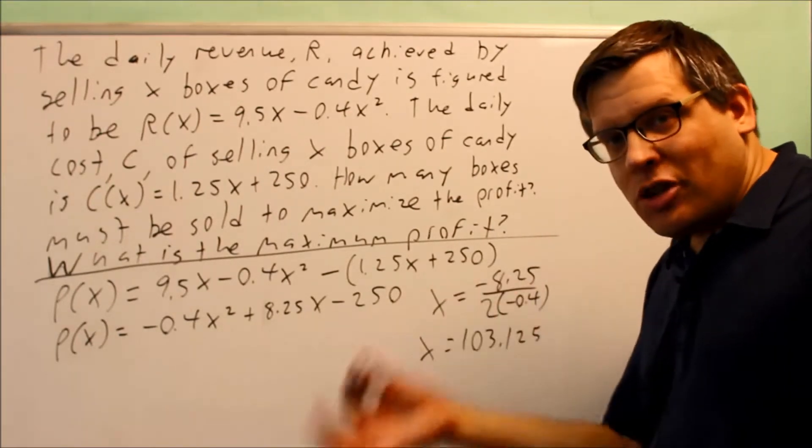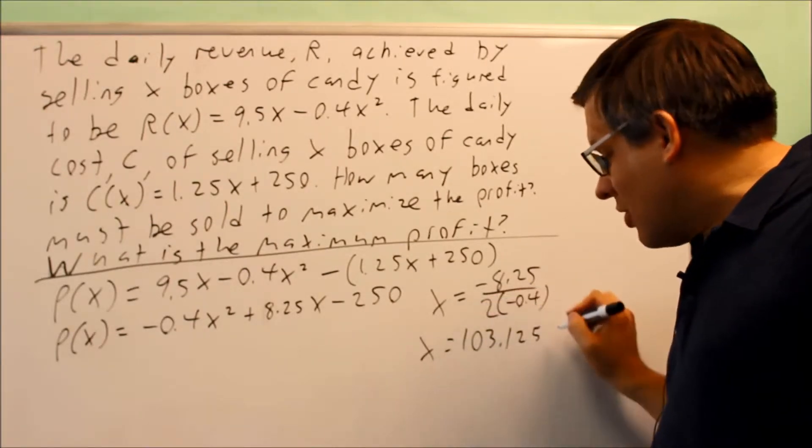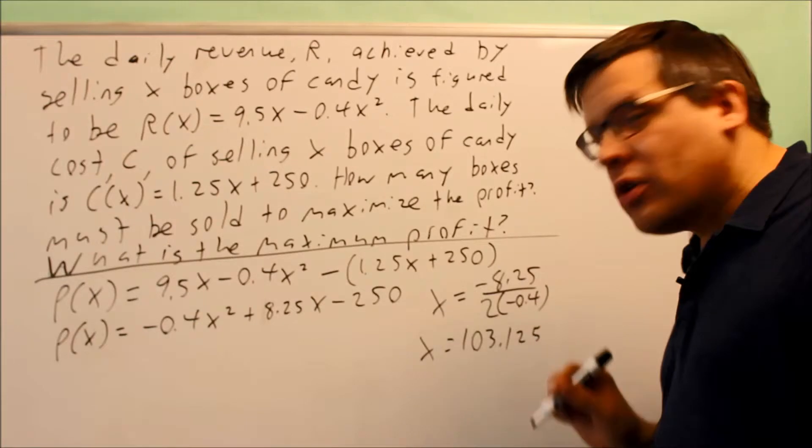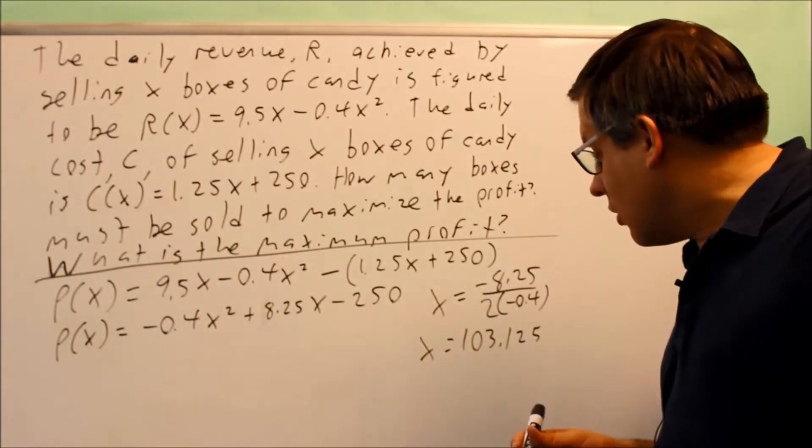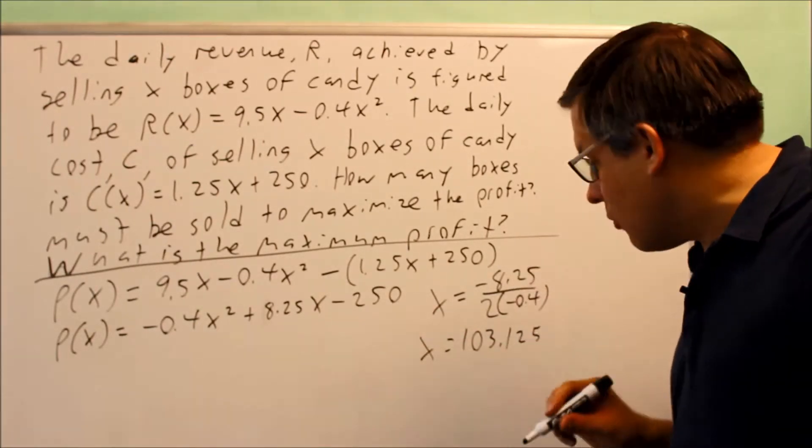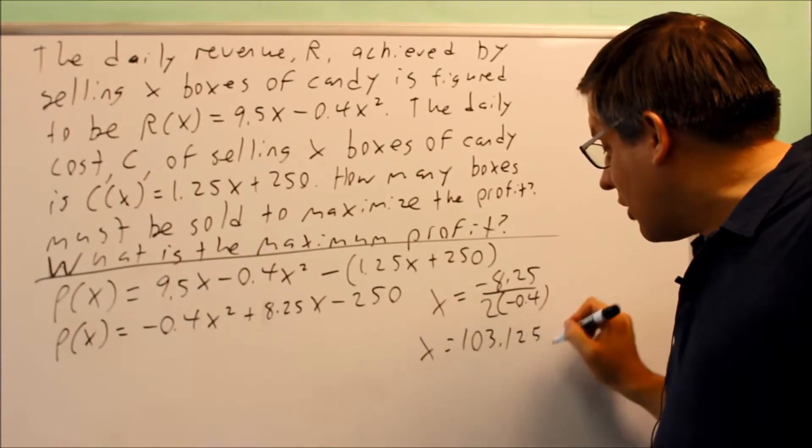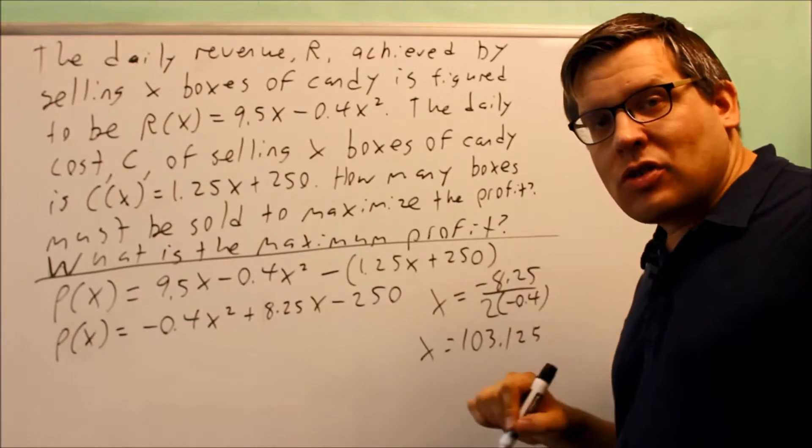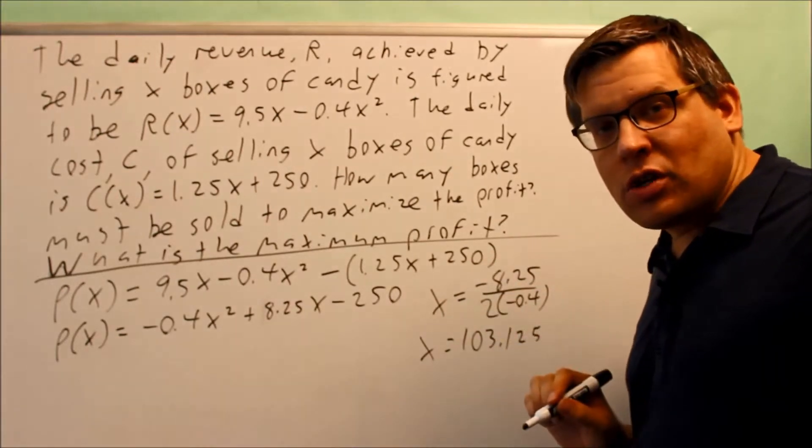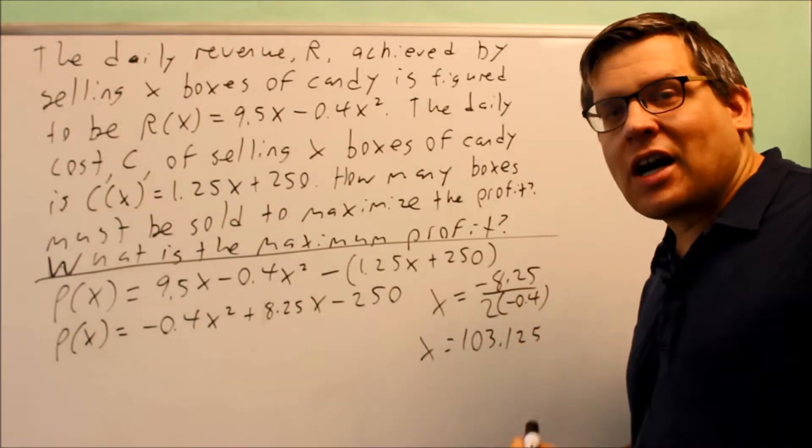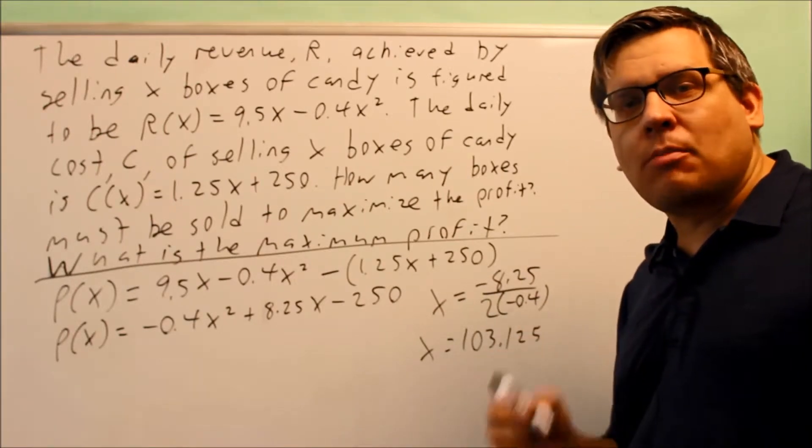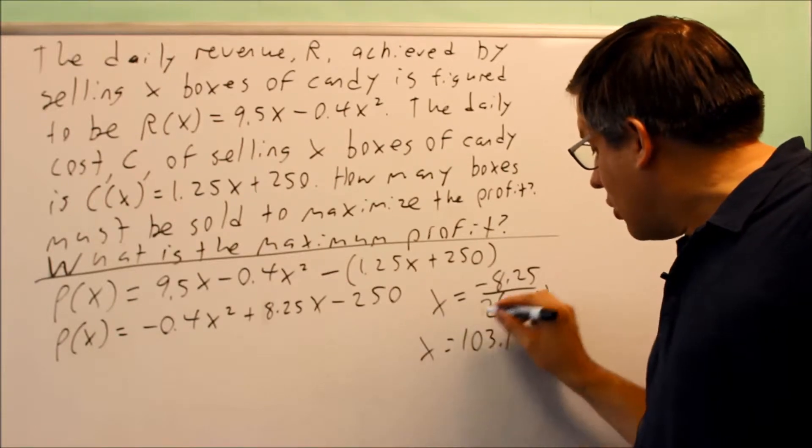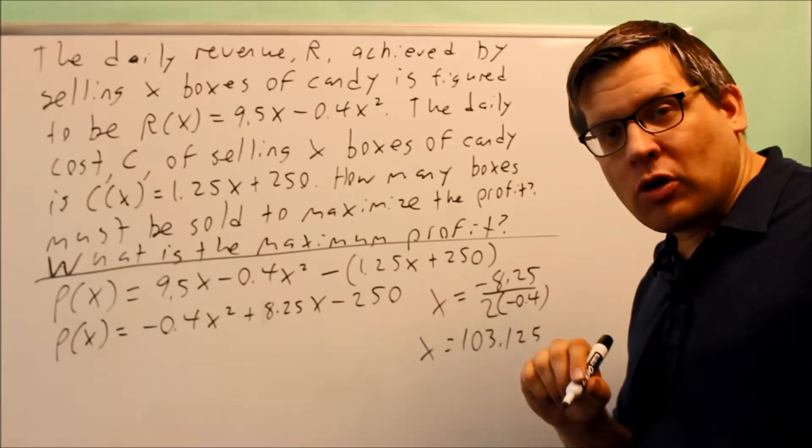That's not a whole number, so we can't sell complete boxes of candy. But in this case we don't want to break open a pack and sell 0.125 parts of a box. We need to actually have this as a whole number. So for these kinds of problems, if we pick 103, that's not right because we haven't quite reached our maximum profit at that point.